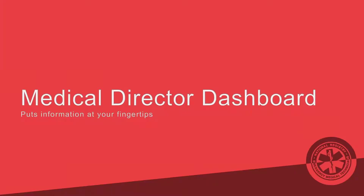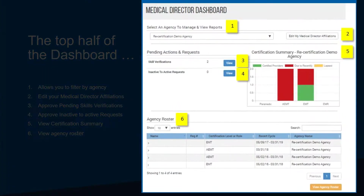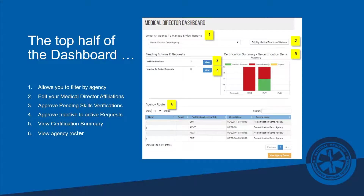A little bit about your dashboard — it's a very handy space with a lot of information. You can filter by agencies if you have more than one agency, and edit your medical director affiliations. Pending actions and requests help you verify skills and verify skills for inactive-to-active. You can get a feel for your agency's recertification activity — what's coming up, what's been done, percentages — and you can see an agency roster.